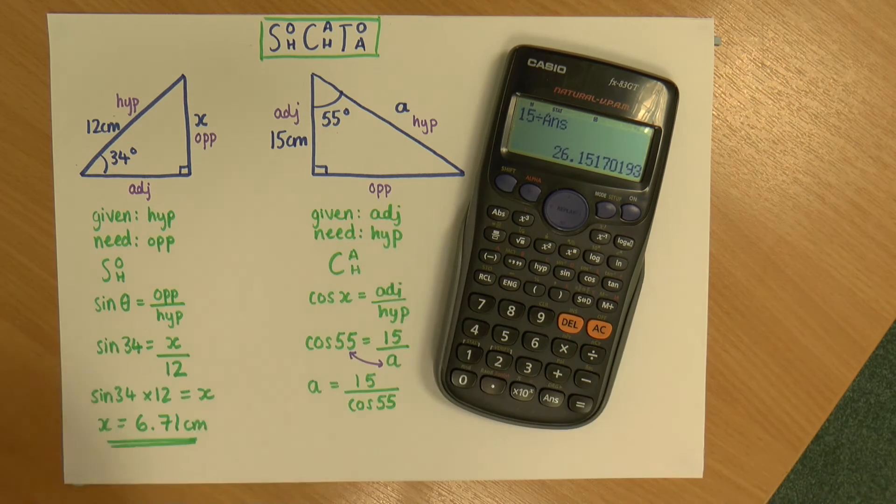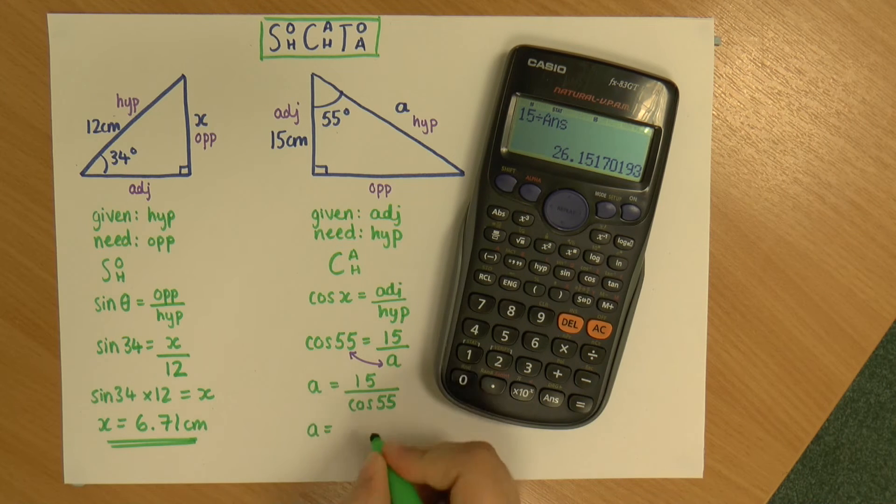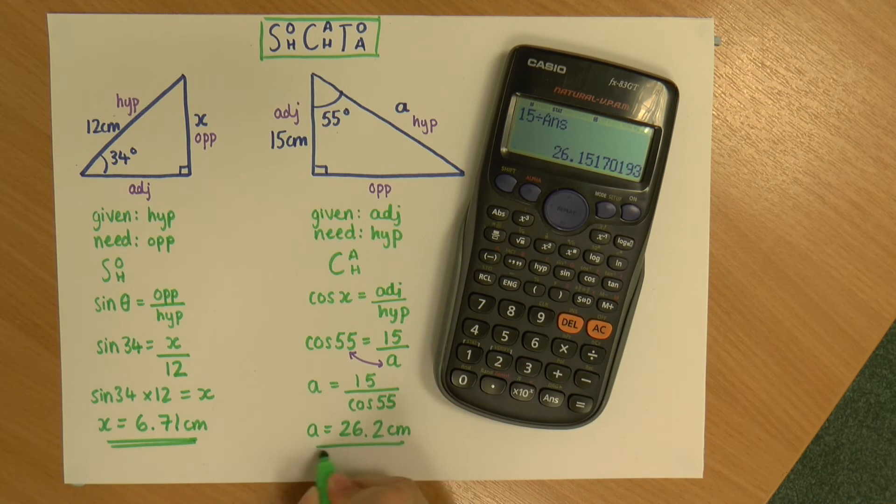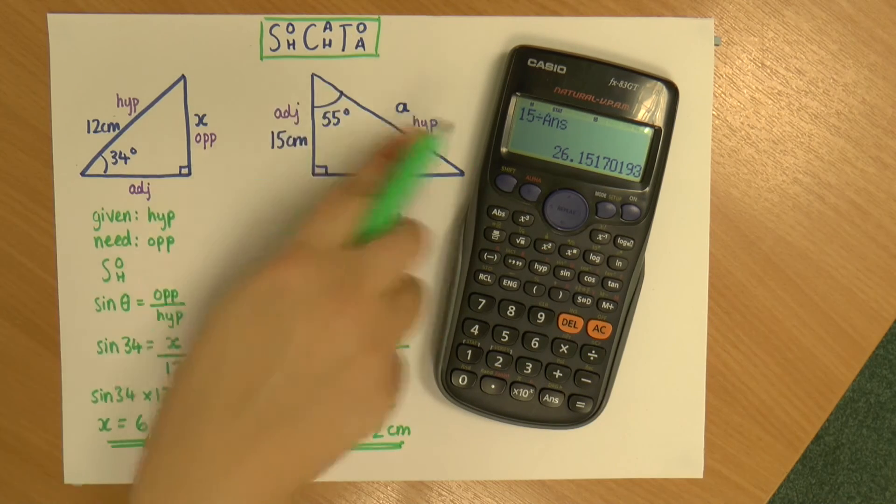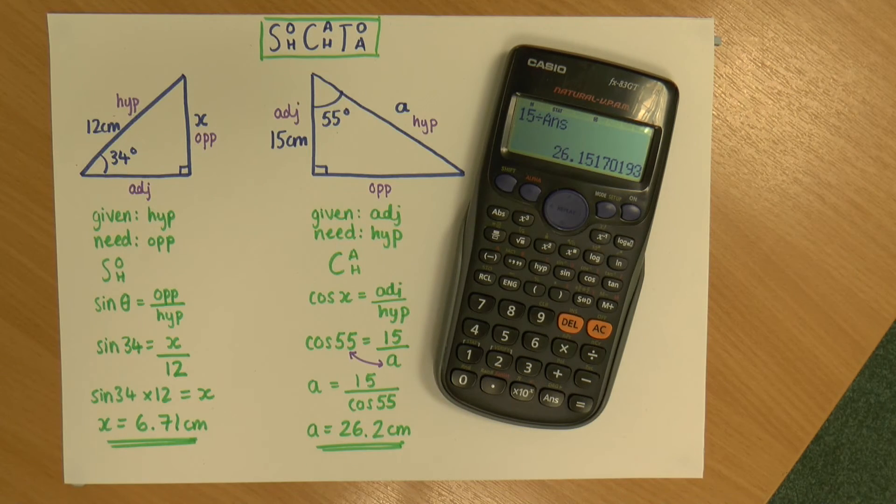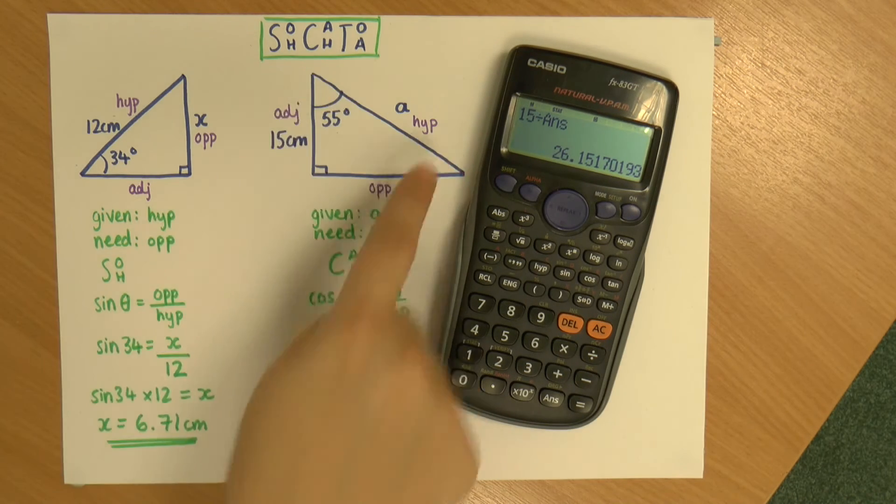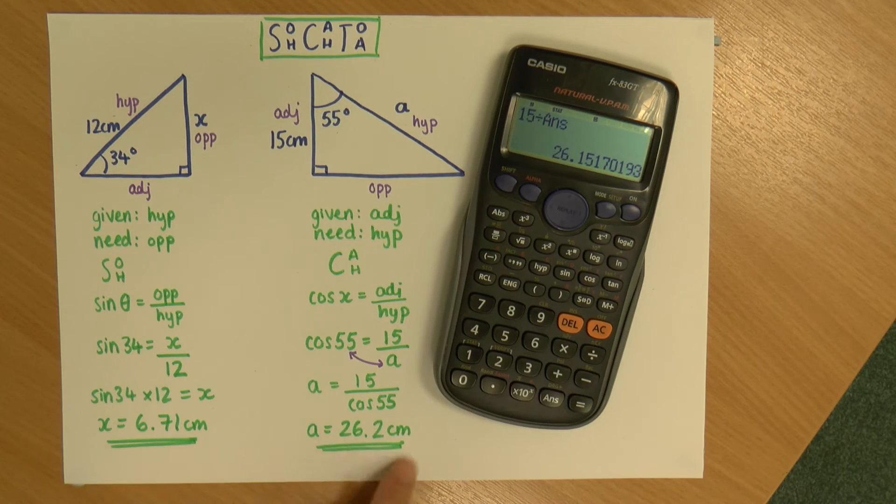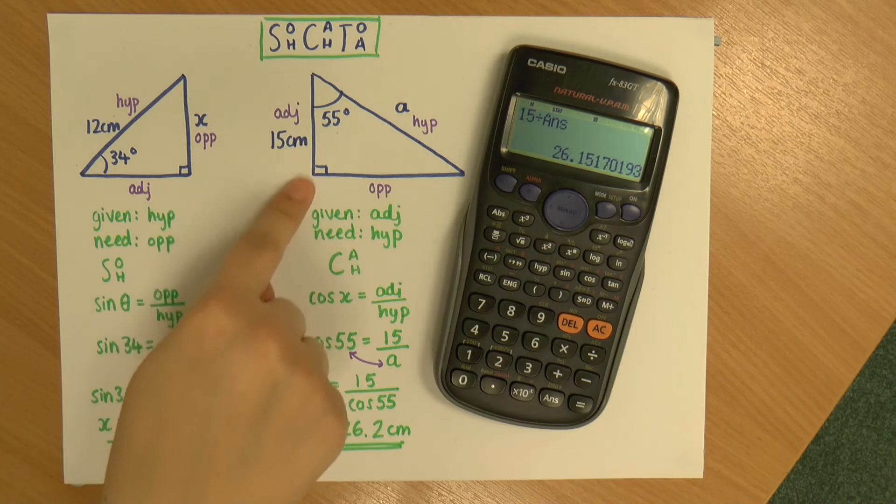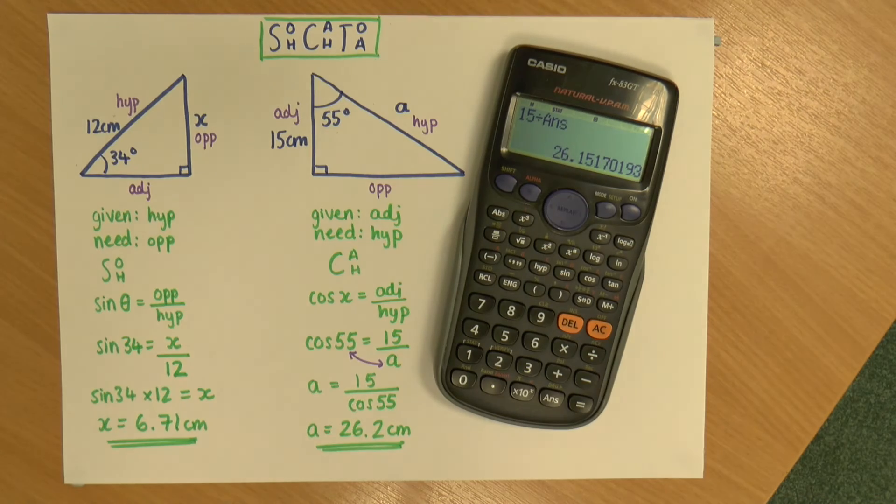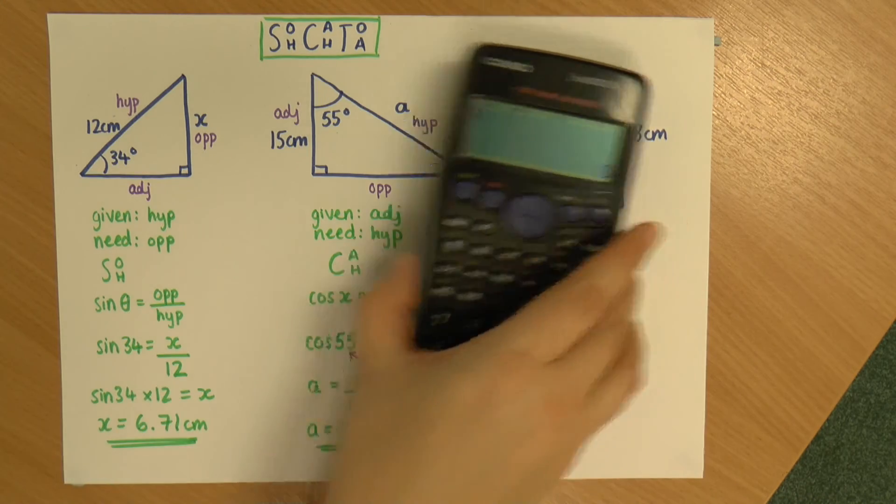And that gives me A is equal to 26.2 centimeters. So that means my hypotenuse is 26.2. And you can sort of check it common sense wise, because you'll know the hypotenuse is the longest side. And this is longer than all the other sides we've been given. Well, the one side we've been given. Perfect.